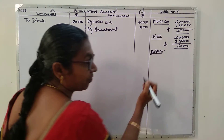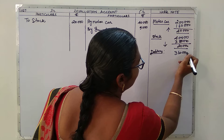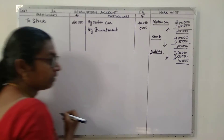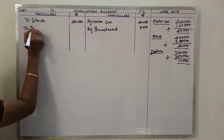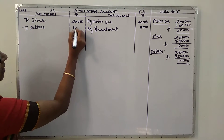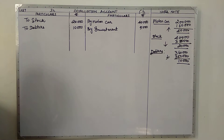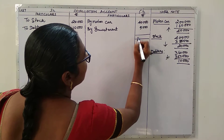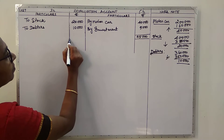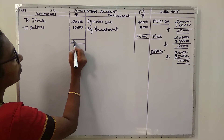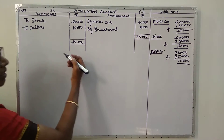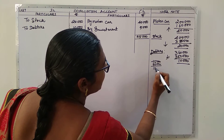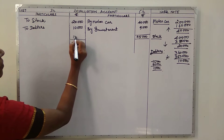The value of debtors given is three lakh sixty thousand but now it is three lakh fifty thousand, so there is a decrease of ten thousand. We bring that to the debit side - debit of rupees ten thousand. Now we close the revaluation account: the credit side totals forty five thousand, debit side totals thirty thousand (twenty plus ten), giving a balance of fifteen thousand which is a profit on revaluation.